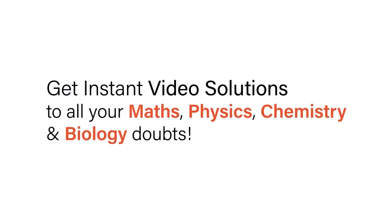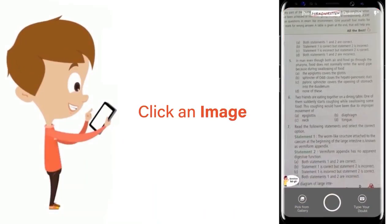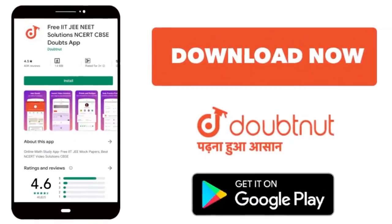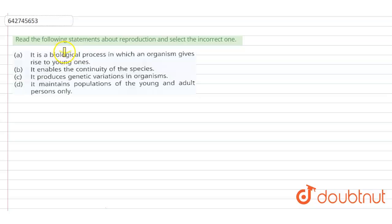With Doubtnet, get instant video solutions to all your maths, physics, chemistry, and biology doubts. Just click the image of the question, crop the question, and get instant video solution. Download Doubtnet app today. Following statements about reproduction, select the incorrect one.